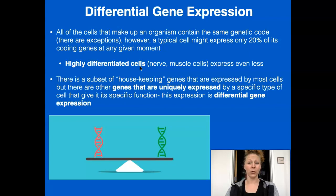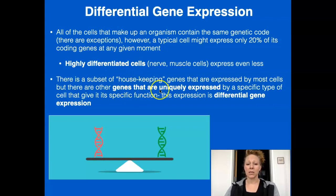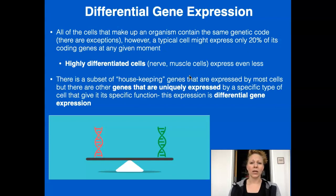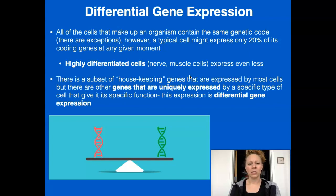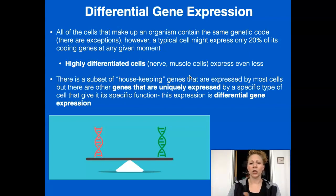Highly differentiated cells are going to express even fewer genes at a moment. One set is the housekeeping genes. Those housekeeping genes are going to be expressed by most cells — these are the actions or traits that every cell is going to need, like mitosis and making lipids. These are the genes that do the jobs every single cell needs.